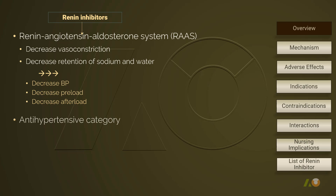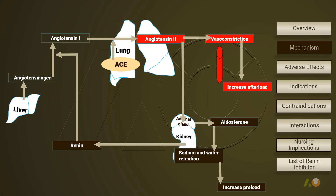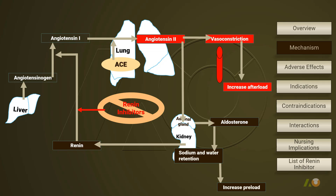Pharmacologically, a renin inhibitor belongs to the category of antihypertensives. The only direct renin inhibitor available is alaskirin, which is taken orally. Here is the diagram that we have been seeing in the previous two lectures — this is the normal physiological mechanism of RAS maintaining normal blood pressure. A renin inhibitor directly affects the renin-angiotensin aldosterone system.